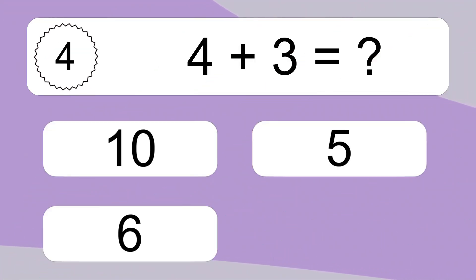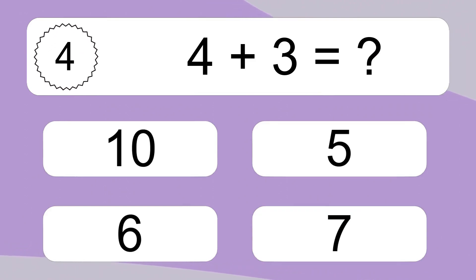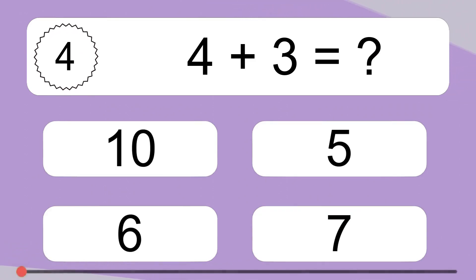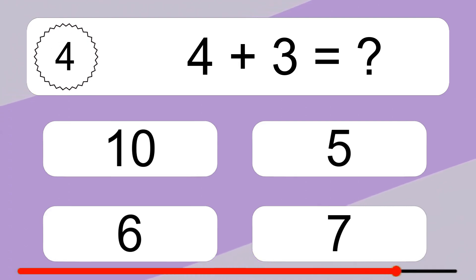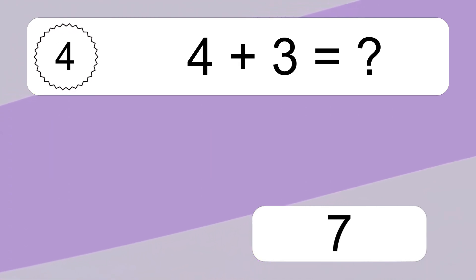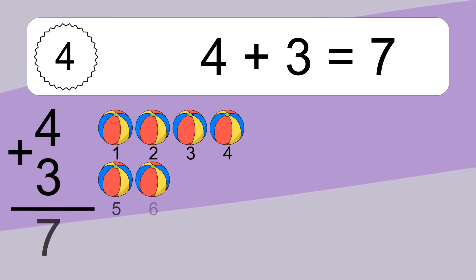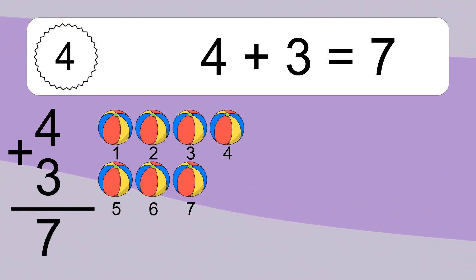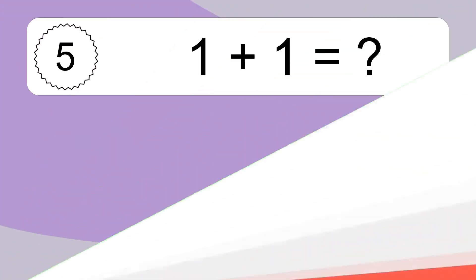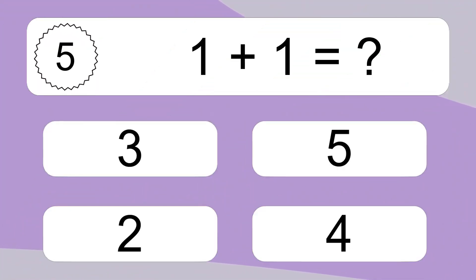4 plus 3 equals what? 6 plus 3 equals 7. Let's count it: 1, 2, 3, 4, 5, 6, 7.